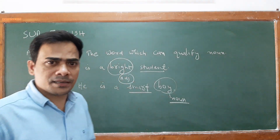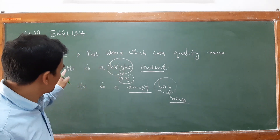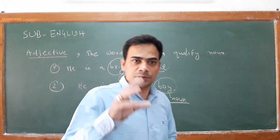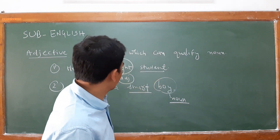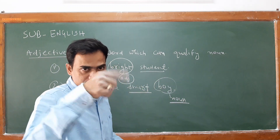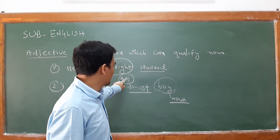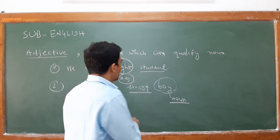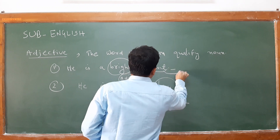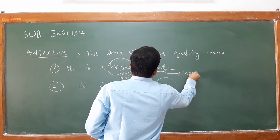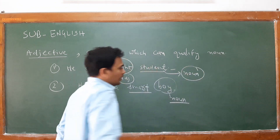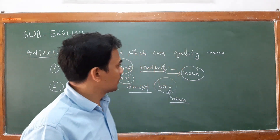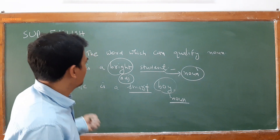The first example: 'He is a bright student.' Now, 'student' is a common noun, and the word 'bright' — which I have circled — is an adjective form. This adjective is qualifying your noun, the student. It is describing your noun.